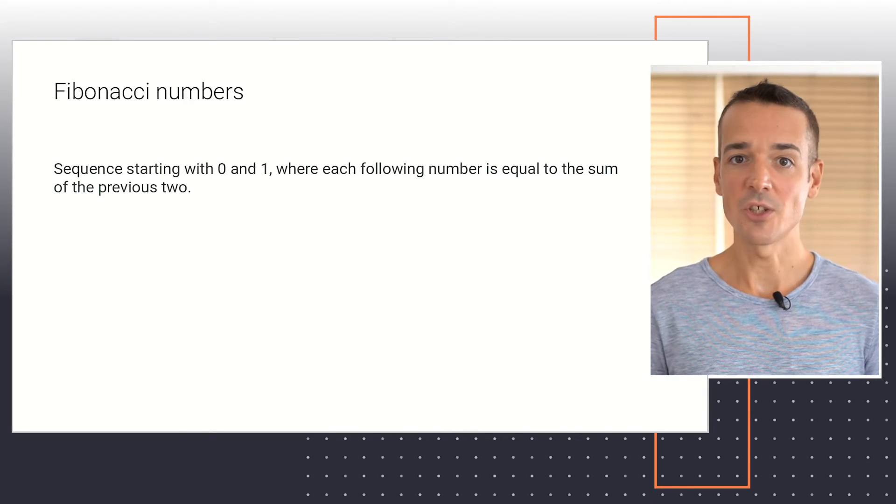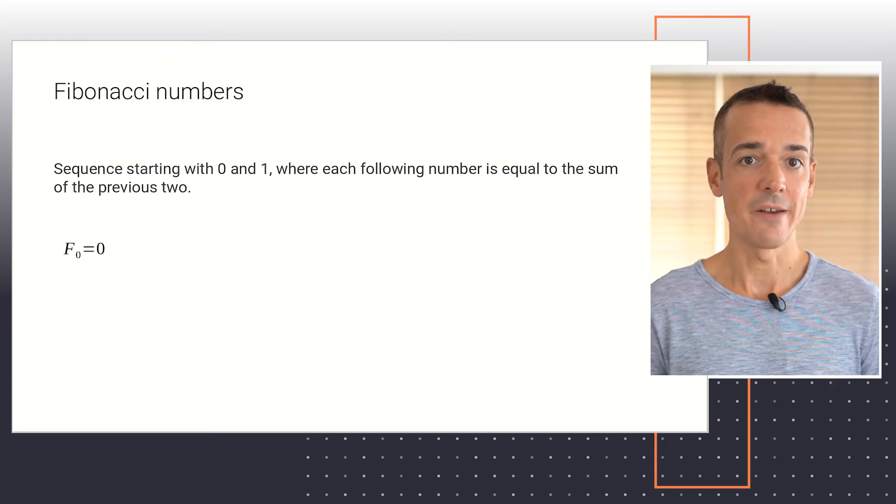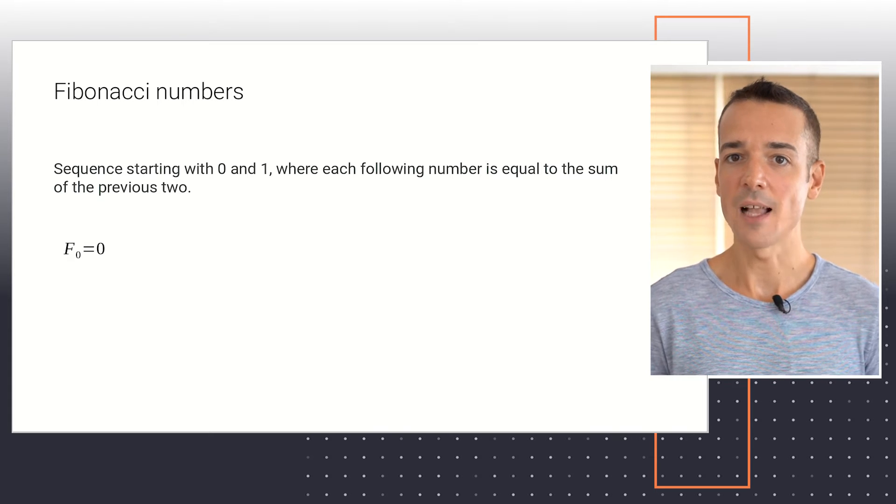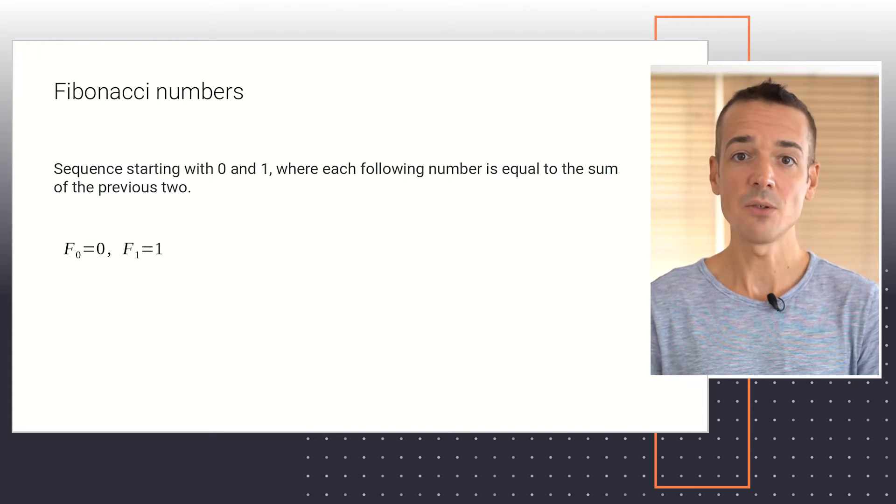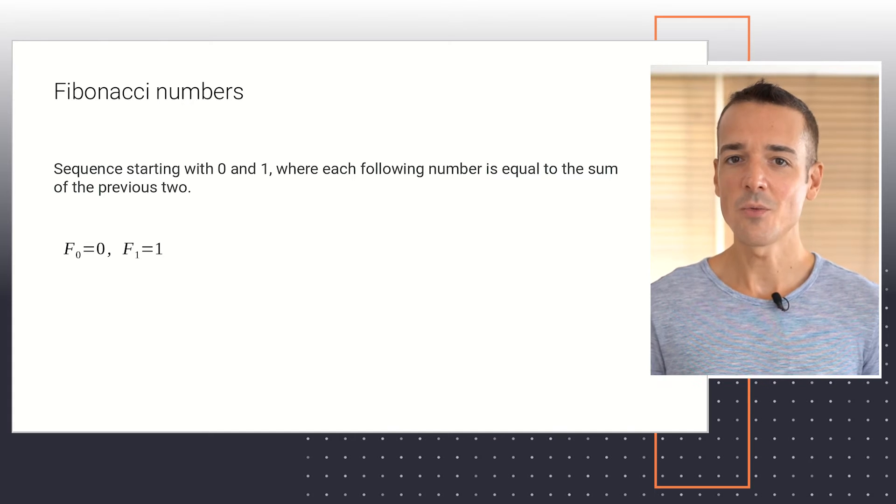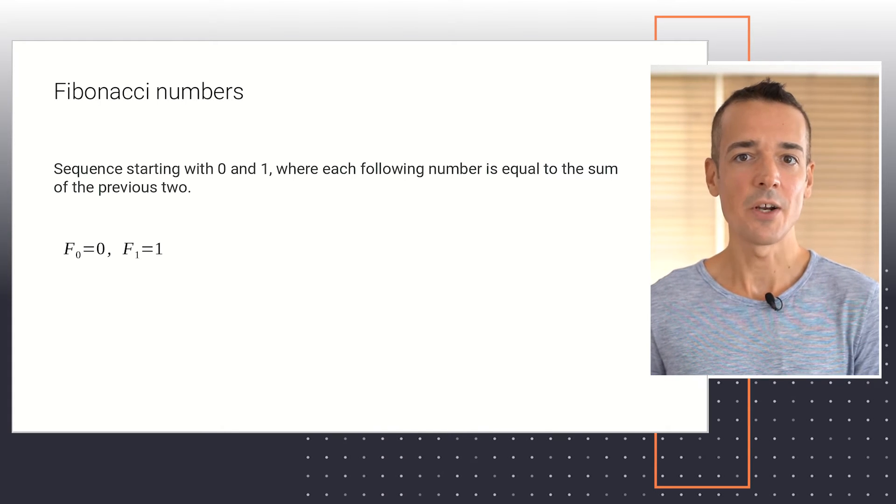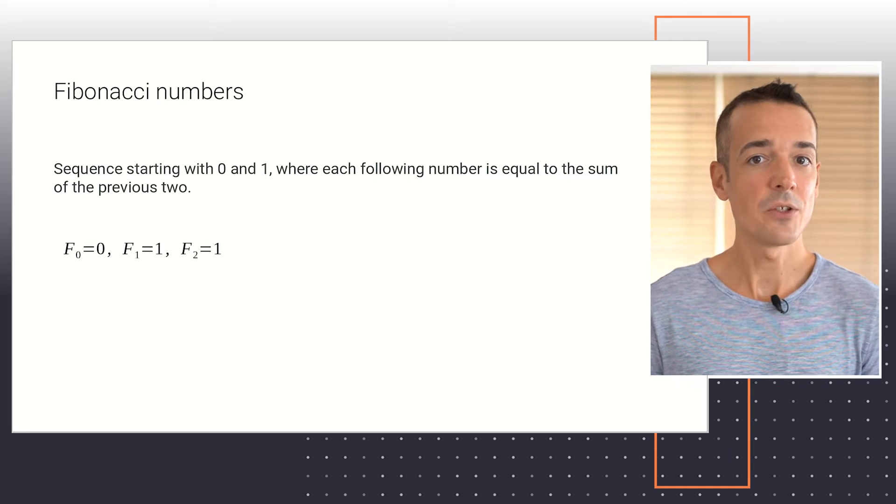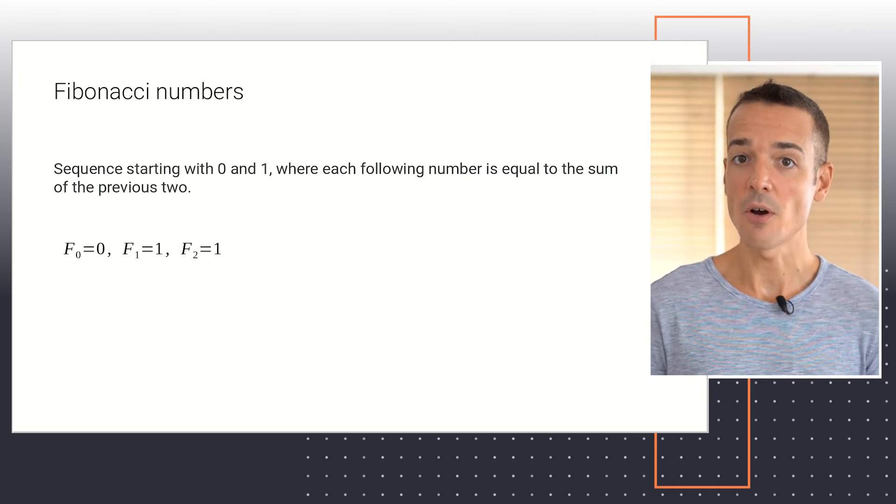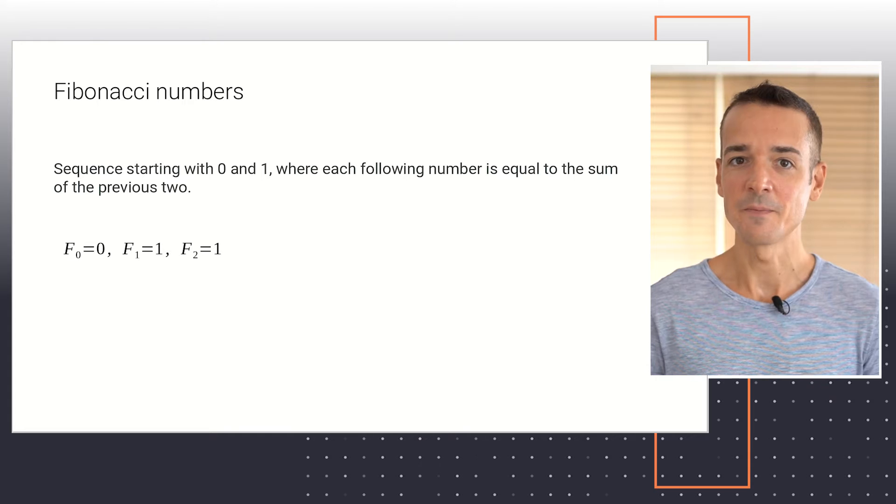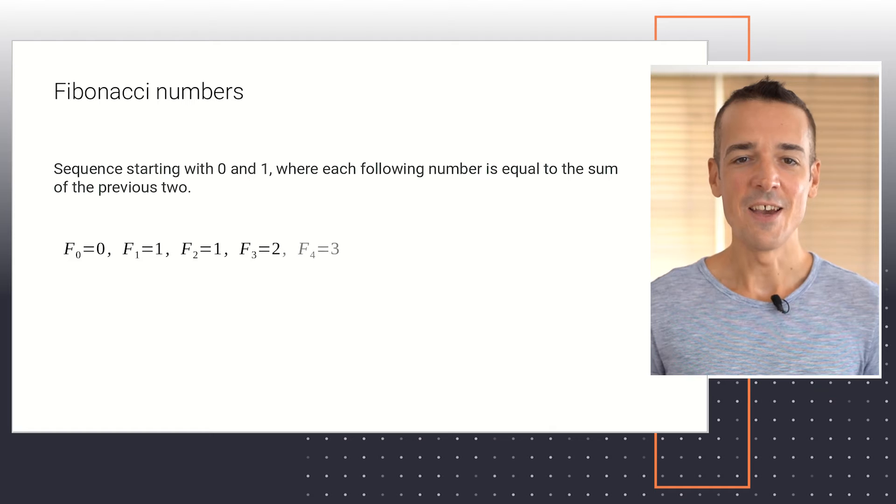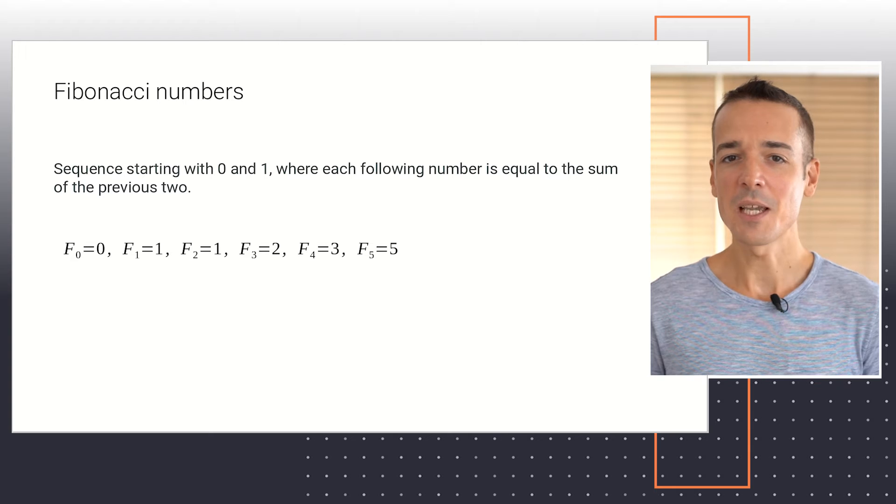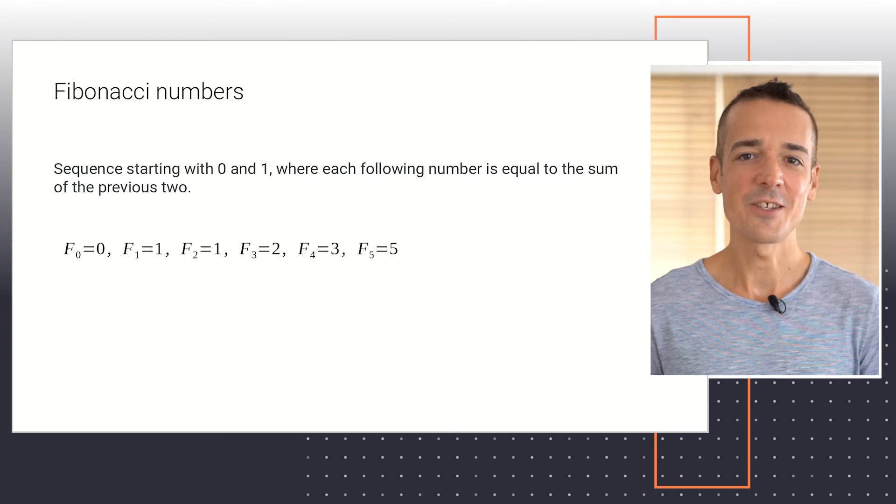In other words, the first Fibonacci number in the sequence, called F0, is set to a fixed value of 0. The next Fibonacci number, called F1, is set to a fixed value of 1. After that, we calculate each Fibonacci number as the sum of the previous two. So, F2 equals F0 plus F1, which is 1. F3 equals F1 plus F2, which is 2. F4 is F2 plus F3, which is 3. F5 is F3 plus F4, which is 5. And you see how this goes.